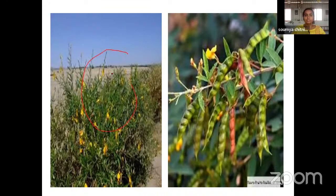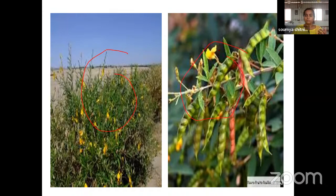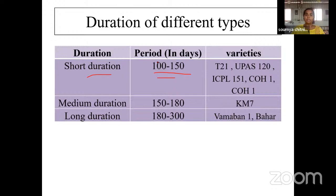Based on duration, pigeon pea is classified as short duration (up to 150 days), medium duration, and long duration (180 to 300 days). Short duration is about five months — even that is considered too long, and scientists are trying to develop extra short-duration varieties completing their life cycle within 120 to 130 days. Long-duration types are mainly found in northern India. Varieties like UPAS 120 and T21 are well known.